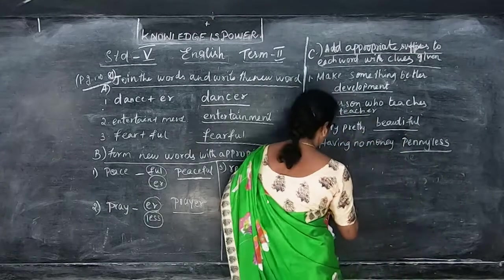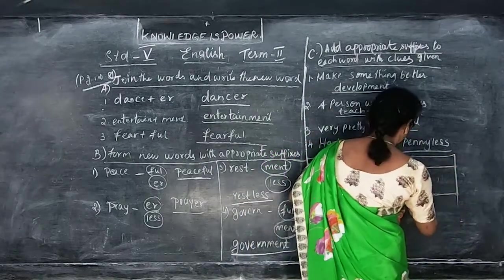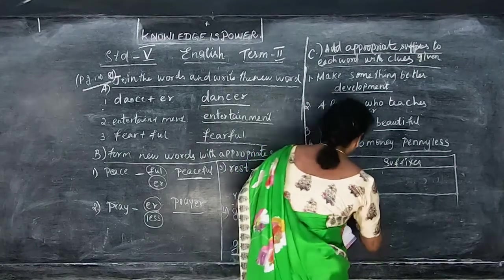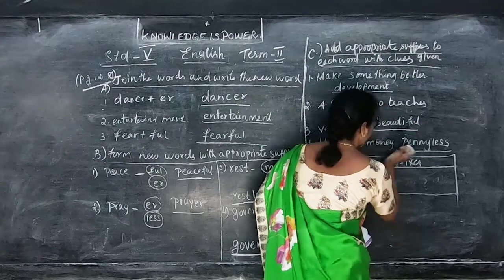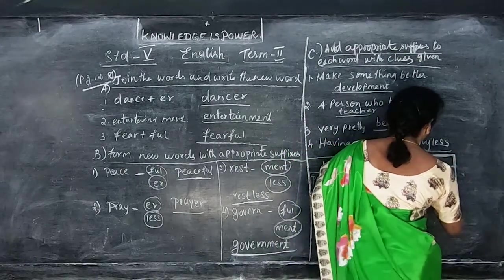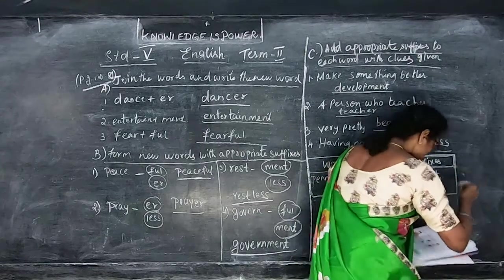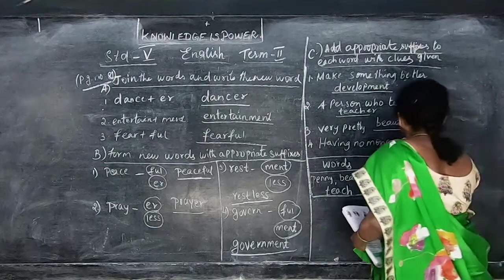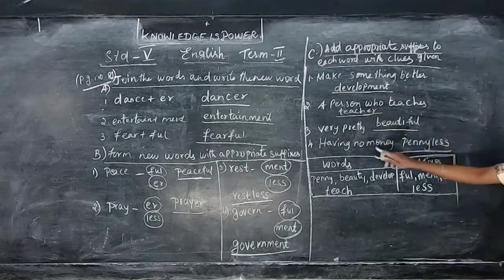The words and suffixes are given as options below. Words given: penny, develop, teach, beauty. Suffixes: -ful, -ment, -er, -less. You have to match and complete the sentences. Make something better is development. A person who teaches is a teacher. Very pretty is beautiful. Having no money is penniless.